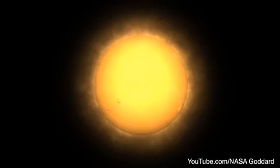During one cycle, the number of sunspots, a good indicator of solar activity, goes from low to high and back down to low.